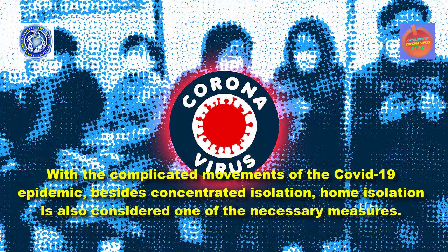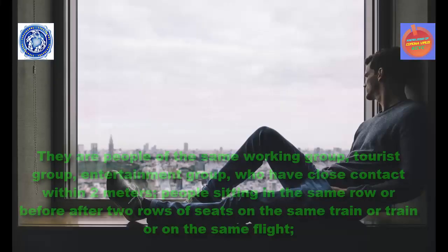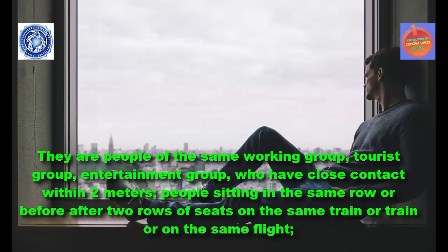With the complicated movements of the COVID-19 epidemic, besides concentrated isolation, home isolation is also considered one of the necessary measures. More specifically, who needs to isolate themselves at home? According to experts, a home isolation person has one of the factors associated with an infected or suspected person. They are people of the same working group, tourist group, or entertainment group who have had close contact within 2 meters, people sitting in the same row or within 2 rows of seats on the same train or the same flight.